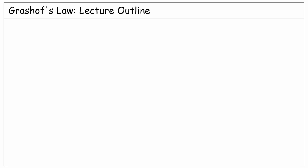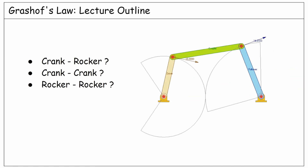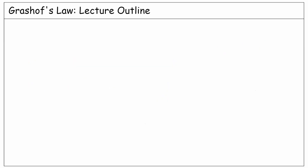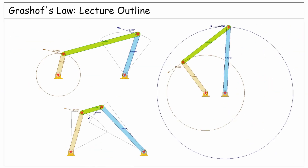In this lecture, we want to learn how to determine the type of motion for a 4-bar linkage using Grashof's law. We will have some examples of 4-bar linkages with different lengths for the links to see how they work according to Grashof's criteria.